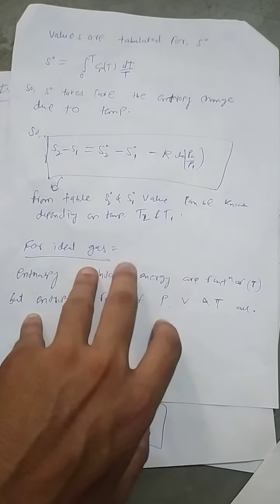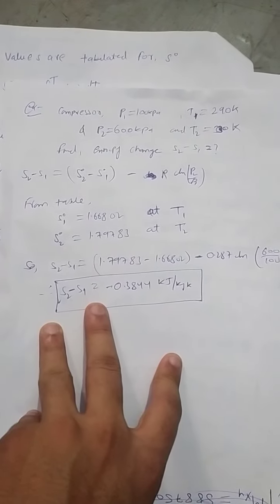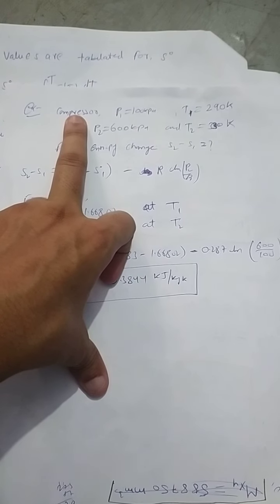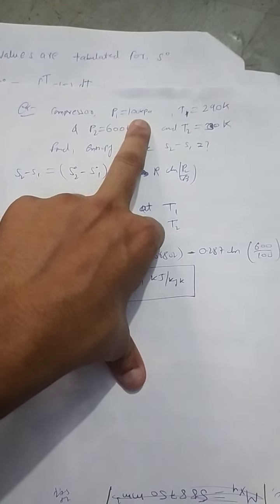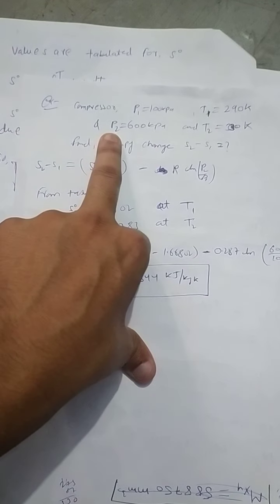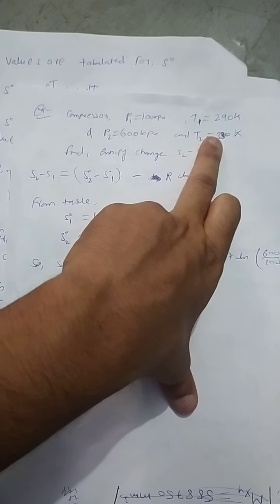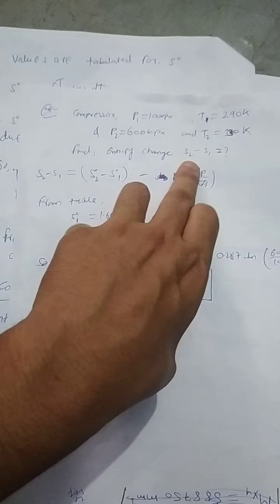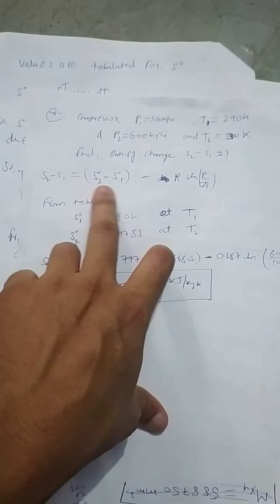Now let's see an example. Given: compressor, initial pressure 100 kPa, temperature 290 Kelvin, final pressure 600 kPa, temperature 330 Kelvin. We have to find the entropy change. So the equation we know, s2 minus s1 is this.